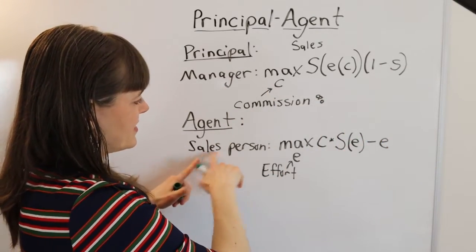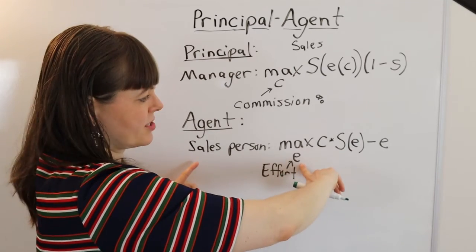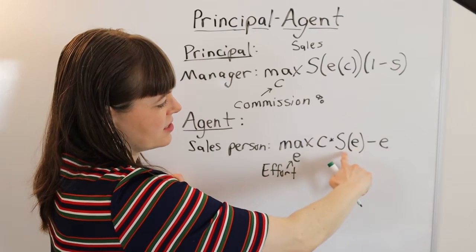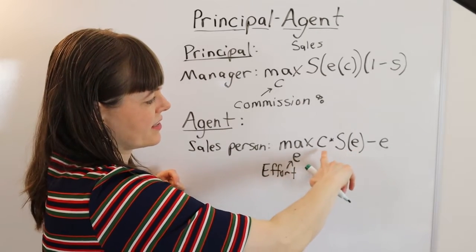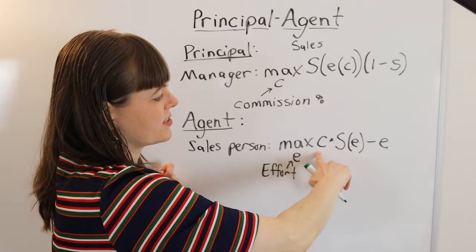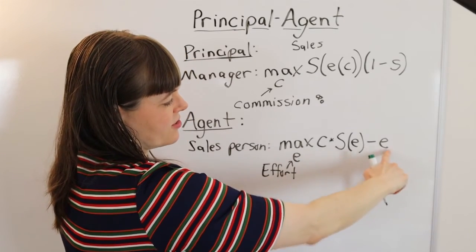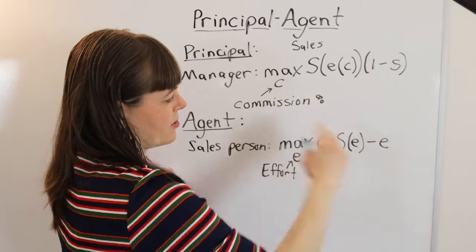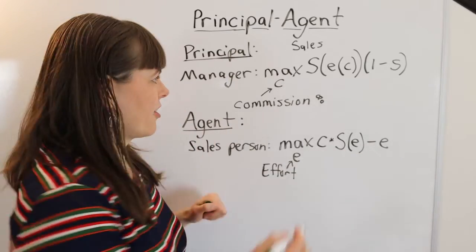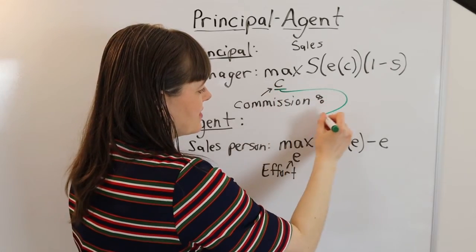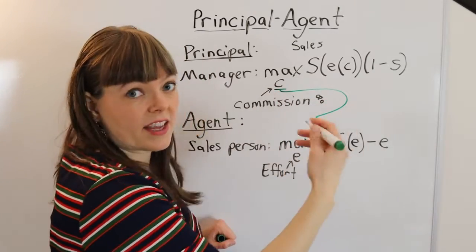Down here, we have a salesperson who is choosing how much effort to put into their job, where they know that the effort leads to higher sales and they get to keep a certain percentage of those sales. So their benefit is the money they get, their cost is their effort, money minus effort. Now, the key pattern here is that the choice variable for the principal is going to be exogenous in the agent's model.